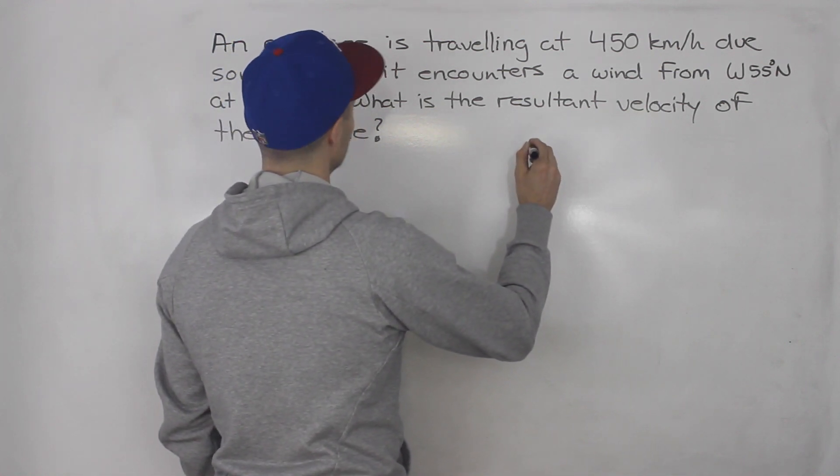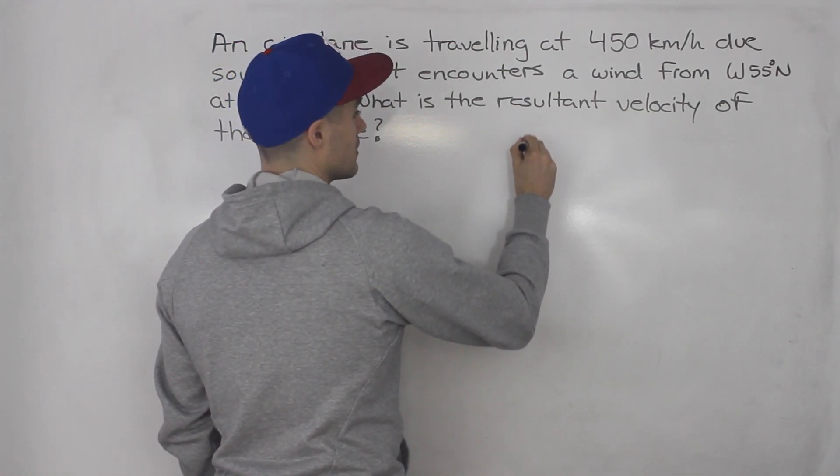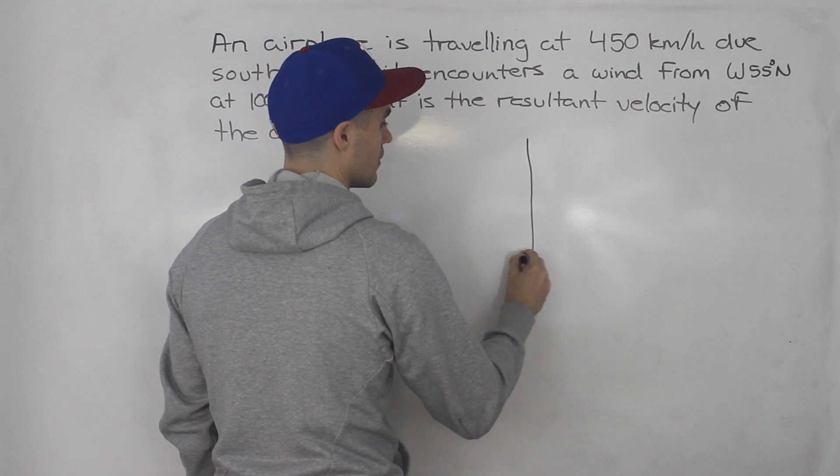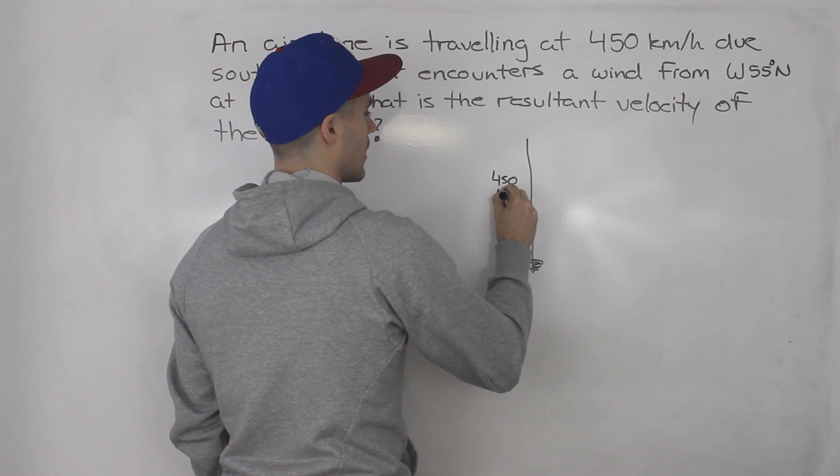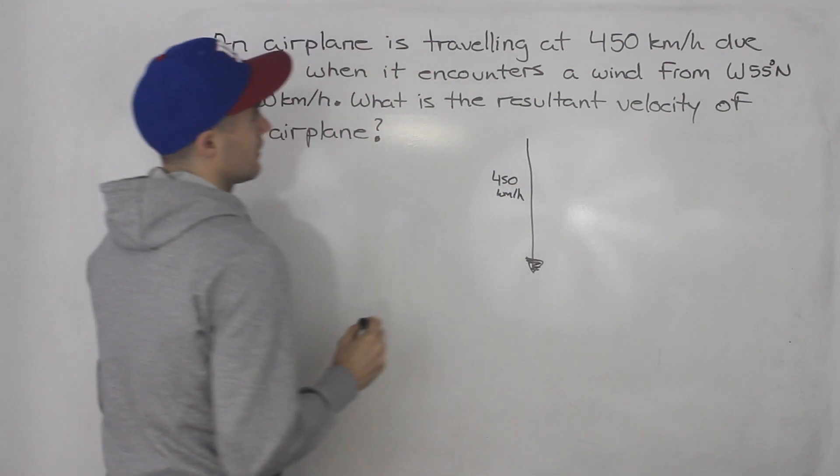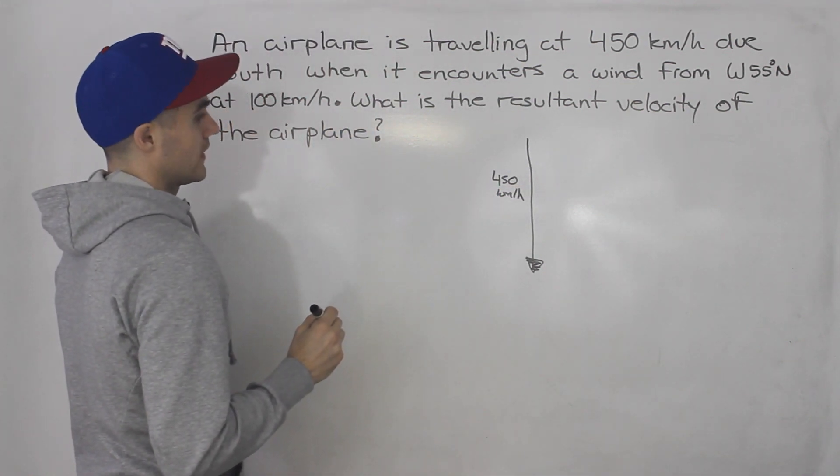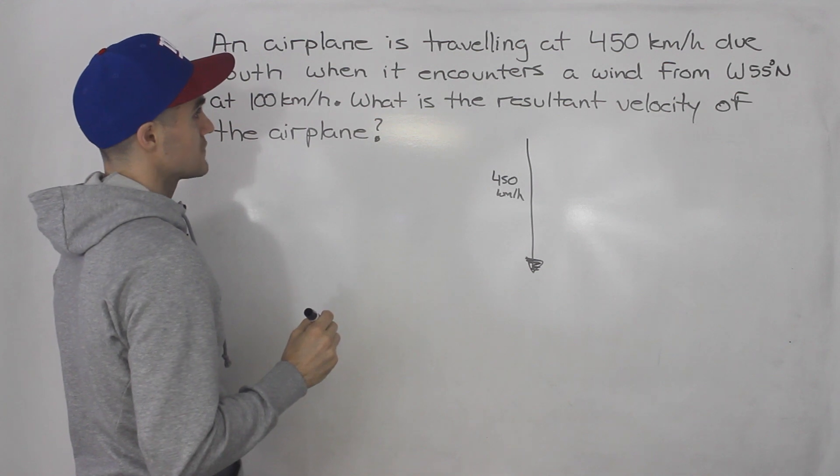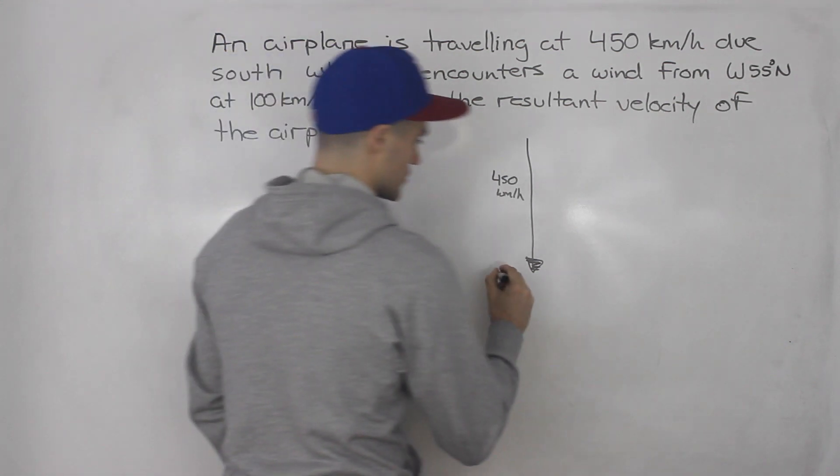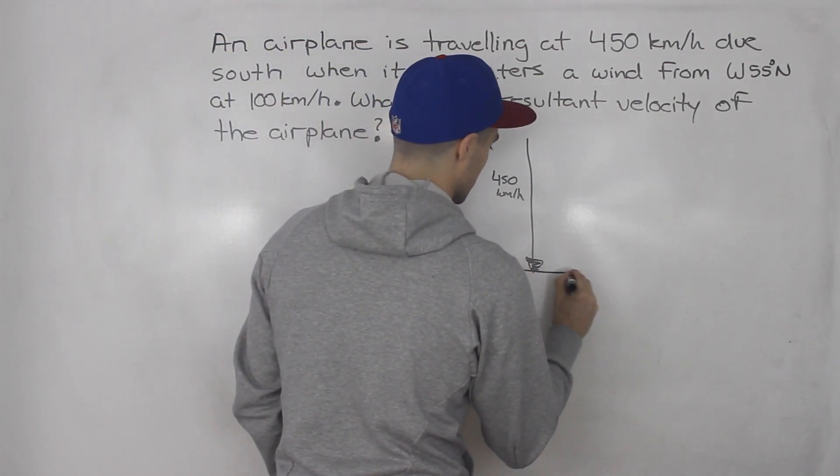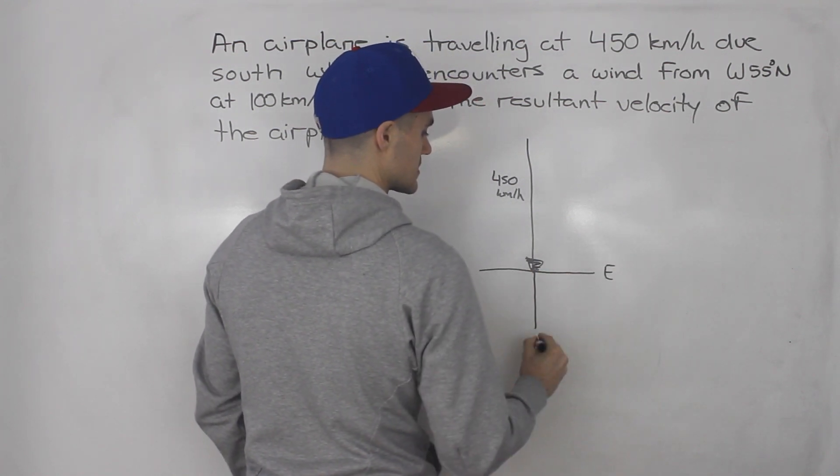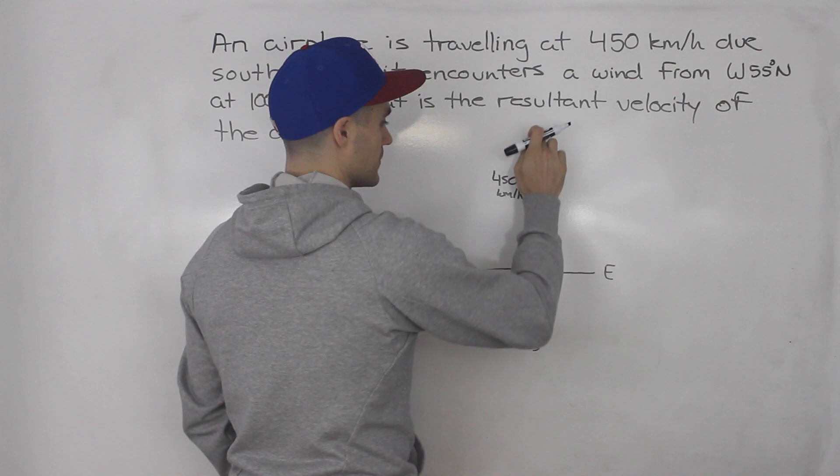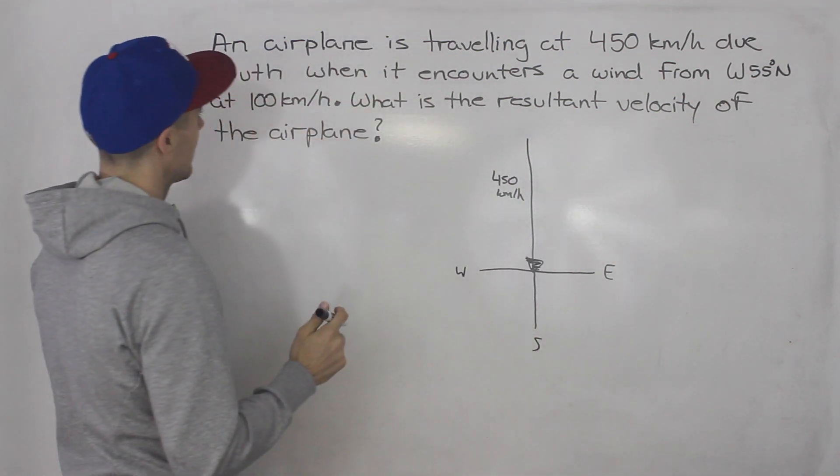So we know the plane is traveling south at 450 kilometers per hour, and then it's encountering a wind from west 55 degrees north. So if we draw a compass here like that, this is east, this is south, this is west, up here is north.